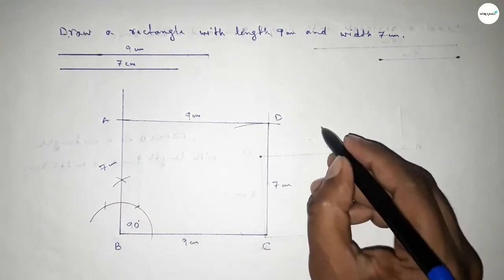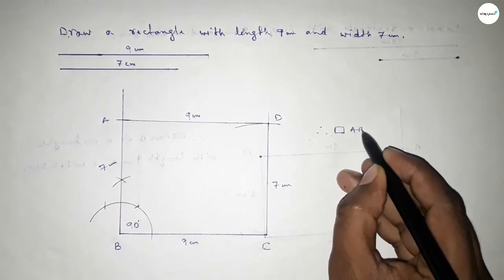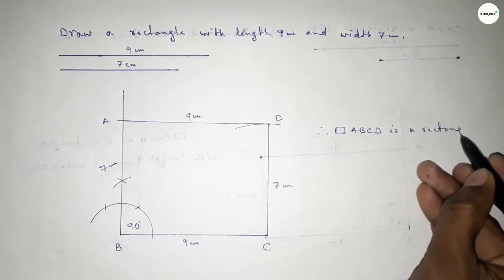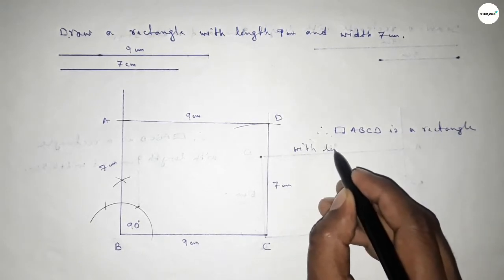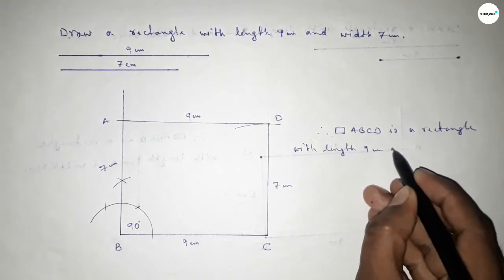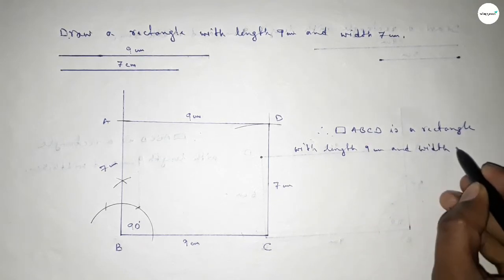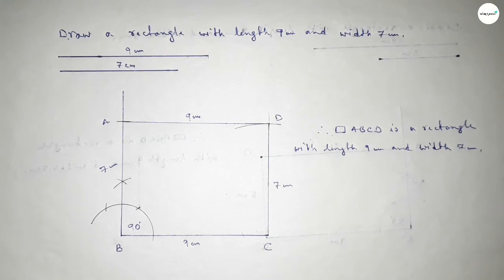Therefore, rectangle ABCD is a rectangle with length 9 centimeters and breadth or width 7 centimeters. That's all. Thanks for watching — if this video is helpful to you, please share it with your friends.